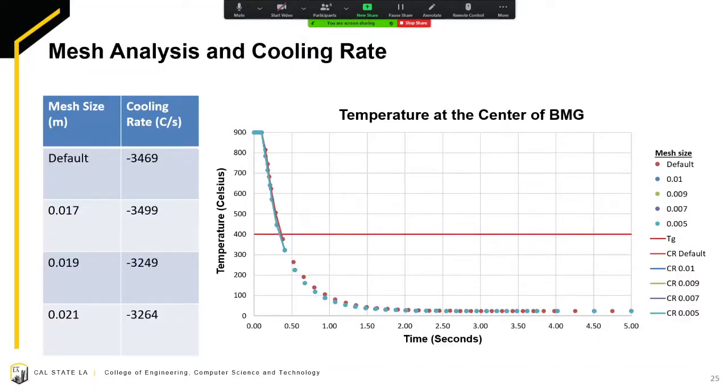Similarly, how we calculated the cooling rate, we took the slope from 900 degrees Celsius melting temperature to 400 degrees Celsius glass transition temperature. The cooling rate calculated was around the 3200 range to around the 3500 range, which more than qualifies for the critical cooling rate of 1.75 degrees Celsius per second.